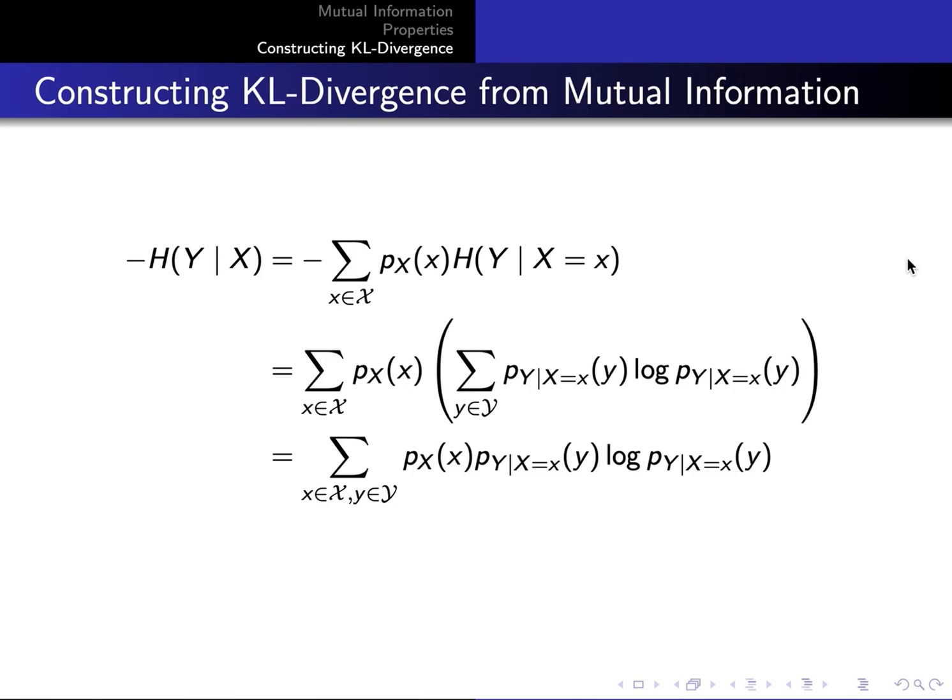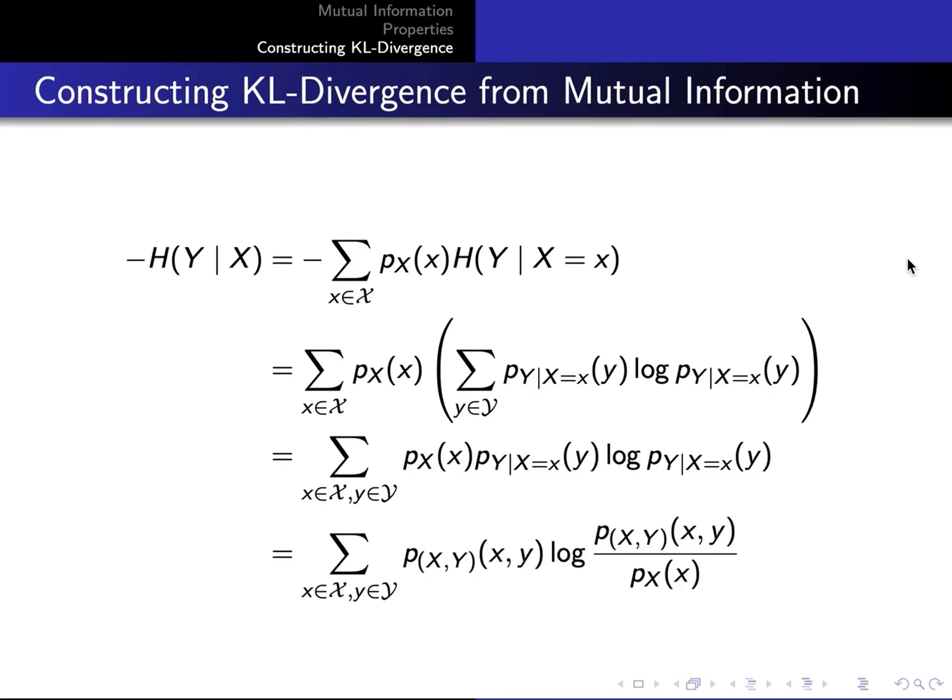Multiplying through, we are now summing over a joint probability space. And then we can write the probability of y given x of y as the joint distribution divided by the marginal with respect to x. The marginals cancel and we are left with this term.